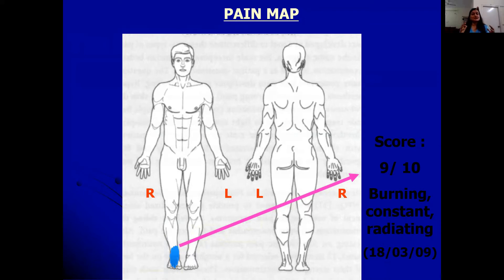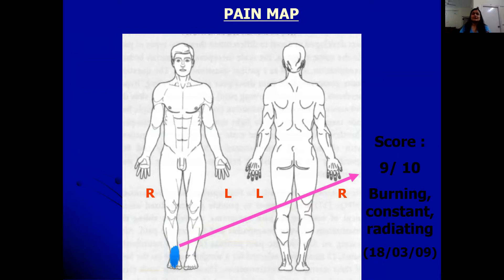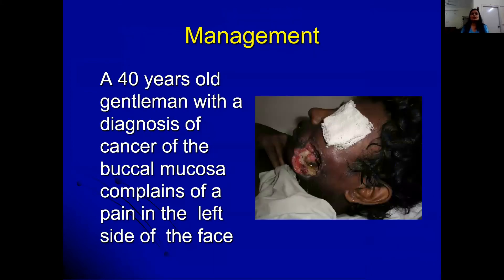Hospitals that recognize pain as a priority will have pain as a fifth vital sign coded in all case files, along with a body chart for pain mapping. The principle is that when you recognize pain, you treat pain — that is why so much importance is given to pain assessment and measurement.